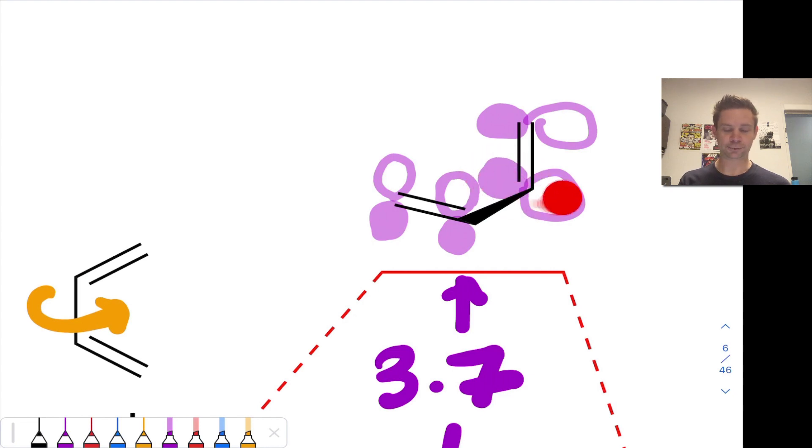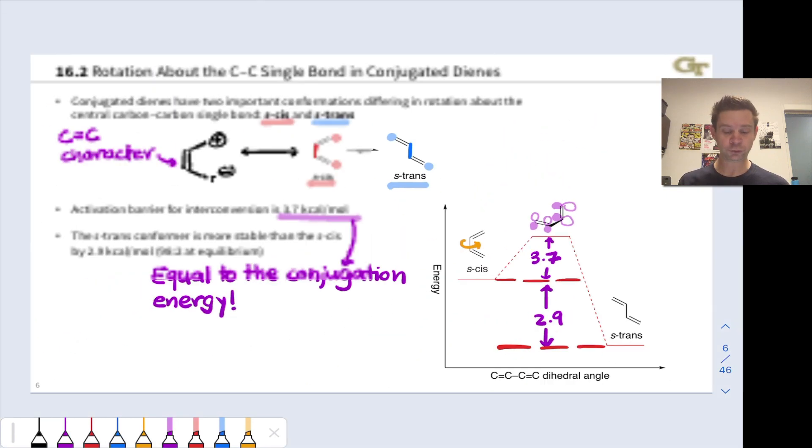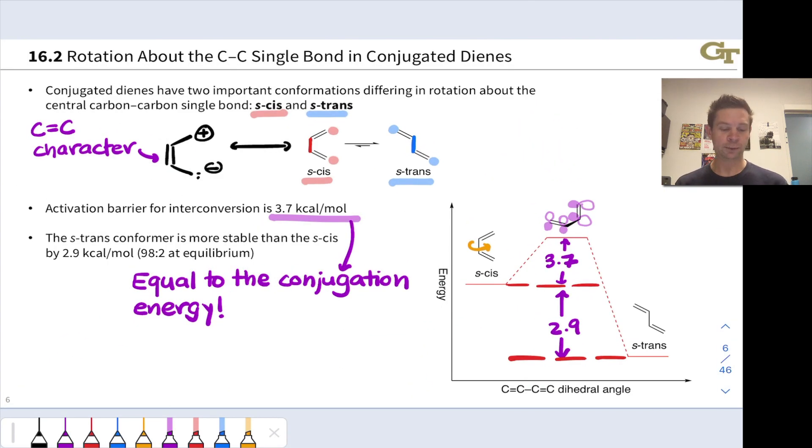There's now no overlap between these p orbitals and these p orbitals, and we've turned this conjugated diene, at least transiently in the transition state, into essentially an isolated diene with the two pi bonds at right angles to each other. So we've destroyed conjugation, and as a consequence, lost that stabilization energy of conjugation. That 3.7 kilocalories per mole is lost in the transition state.